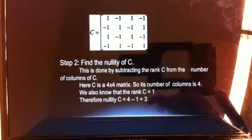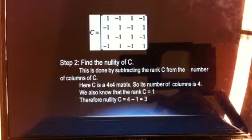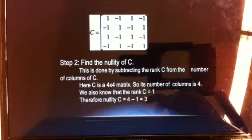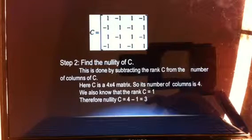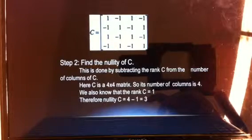Here C is a 4 by 4 matrix like I had described before. So its number of columns is 4. We also know that the rank of C is from the previous slide. Therefore, the nullity of C is equal to 4, the number of columns minus 1, the rank, which is equal to 3. So, nullity of C is 3.